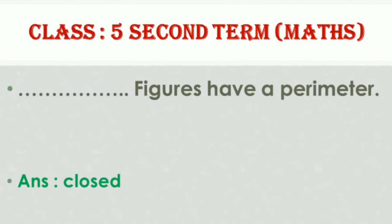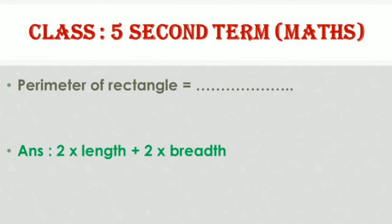Closed figures have a perimeter. The perimeter of a rectangle is equal to 2 times length plus 2 times breadth.